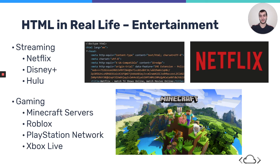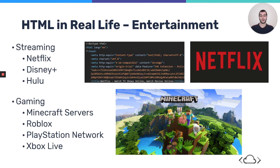Another example is entertainment. We have popular streaming sites like Netflix, Disney Plus, and Hulu. The way that they bring content from the cloud or different servers around the world right to your phone, TV screen, or laptop — those are processing through HTML code. Similarly, gaming is somewhat similar to streaming. If you're playing online multiplayer in a game like Minecraft, Roblox, or Fortnite, you're most likely using HTML code because you're connected to the internet. You need to be able to access servers to play multiplayer, and so you're using HTML code.